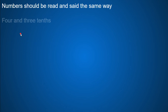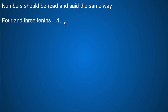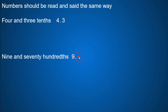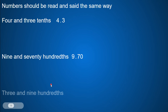Whenever I write a number in word form, it needs to be read and said the exact same way in number form. So four and three tenths: I put down the four and a decimal point for the 'and,' and then three tenths. Since it's tenths, there's only one digit after the decimal point. Whenever I have hundredths, I need two digits after the decimal point. So nine, then the decimal point, then 70 hundredths. I write down 70 and there are two digits, so I am out to the hundredths place. That's nine and 70 hundredths — both said and read the same way.